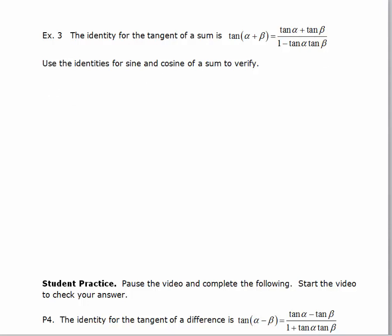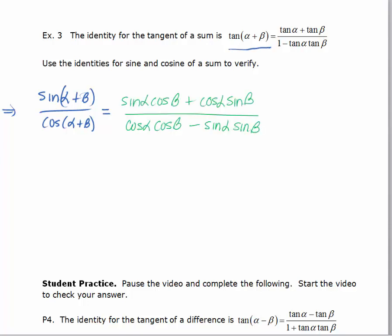I'll start by rewriting tan of alpha plus beta as sine over cosine, using the quotient identity — so sine of alpha plus beta over cosine of alpha plus beta. From here, I'm going to use the sum formulas for sine and cosine. For the numerator we get sine alpha cosine beta plus cosine alpha sine beta, and for the denominator we get cosine alpha cosine beta minus sine alpha sine beta.